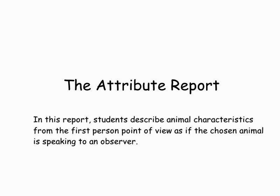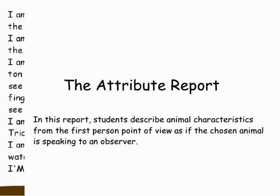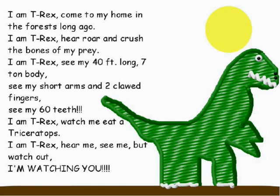This is an attribute report, and this can be done as young as kindergarten. The project you're going to see was done as a buddy project between kindergartners and fifth graders — the kindergartners relayed what they had learned and the fifth graders did the typing for them. 'I am a T-Rex, come to my home in the forest long ago. I am a T-Rex, hear my roar and crush the bones of my prey. I am T-Rex, see my 40-foot-long, seven-ton body. See my short arms and two clawed fingers. See my 60 teeth. I am T-Rex, watch me eat a triceratops. I am T-Rex — hear me, see me, but watch out, I'm watching you.' Just another way to teach point of view — it's one of those things that's really hard to teach in the context of nothing, but when you put it in context of something, it makes it easier for them to understand.